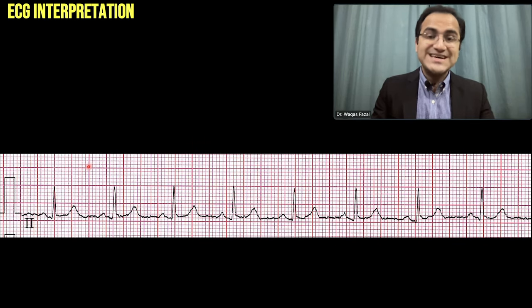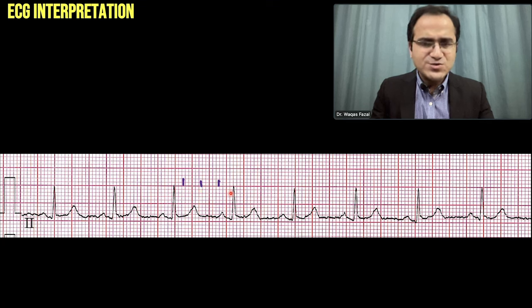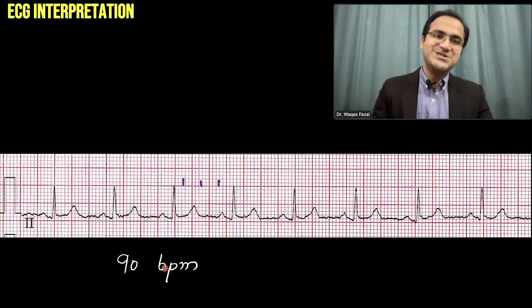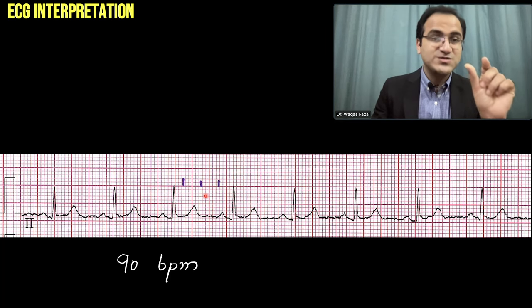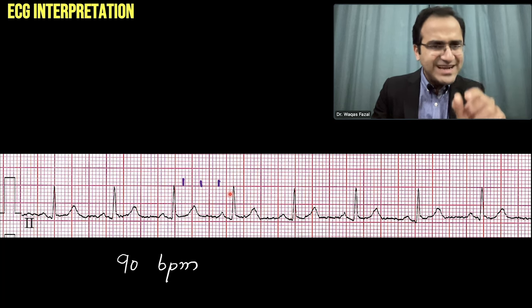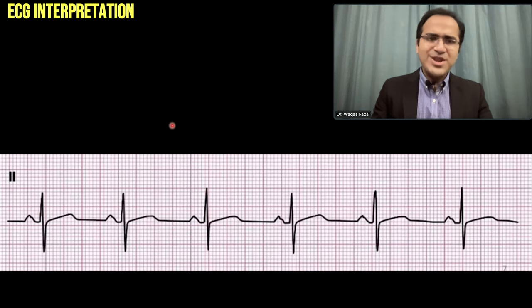Calculating rate by square counting on this ECG: counting the squares — one large square, two, and almost two-thirds of the third. So: 300, 150, 100, and a little less than 100. We call the rate approximately 90 beats per minute. One box = 300, two = 150, three = 100, and with a bit extra past three we estimate 90 beats per minute.